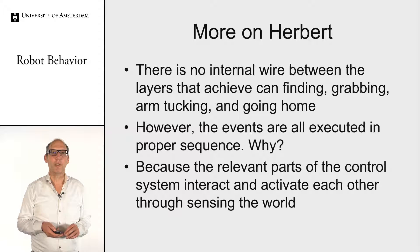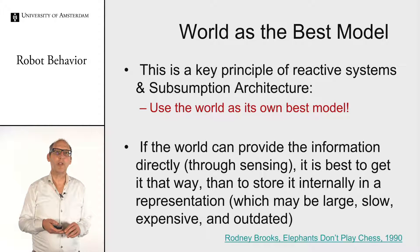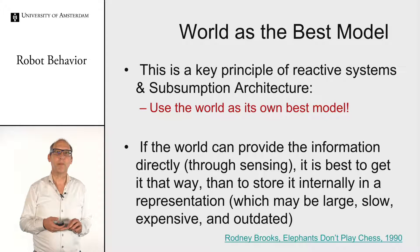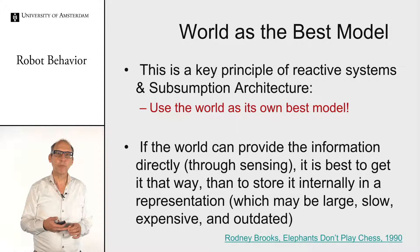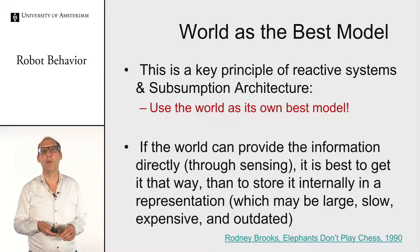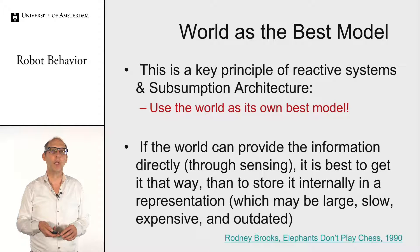Based on this experience, Rodney Brooks in his famous paper 'Elephants Don't Play Chess' concluded: use the world as a model because it is the best model there is — it is very detailed, always up to date, and you never have incomplete data. If you can get information directly through sensing, then go that way. Storing information internally slows you down, becomes outdated, and then you have to implement mechanisms to forget things again.